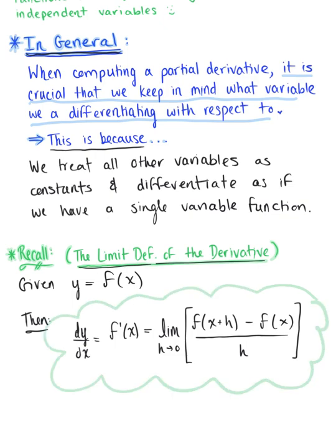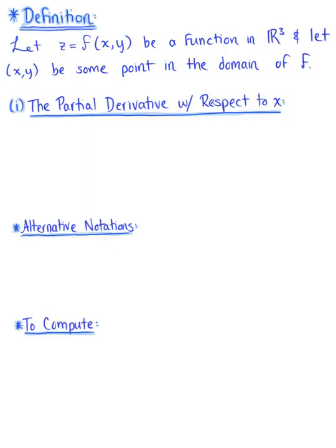As we look at the definition of partial derivatives of a function of two variables, it's going to look very similar to that limit definition. So here is the definition. We let z = f(x, y) be some function in R³.